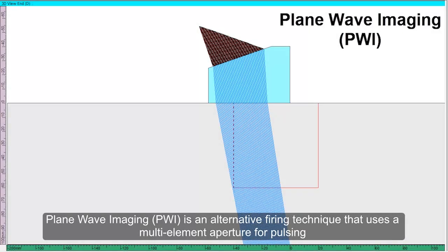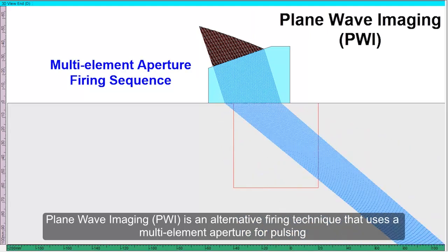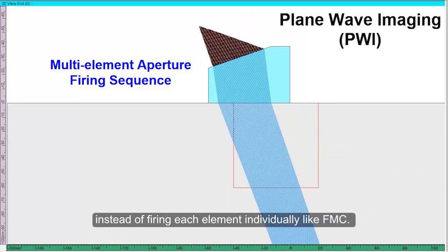Plane wave imaging, or PWI, is an alternative firing technique that uses a multi-element aperture for pulsing, instead of firing each element individually, like FMC.